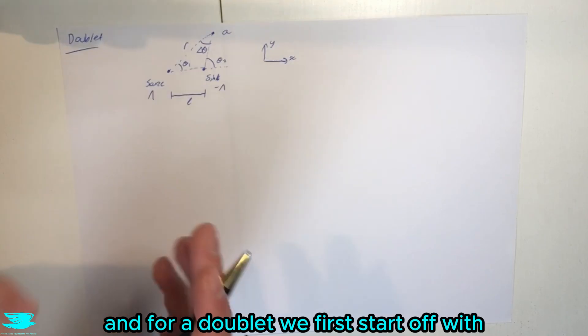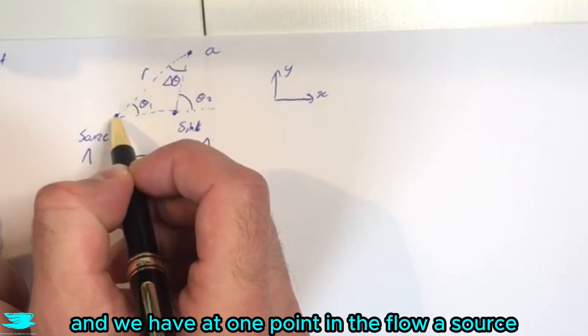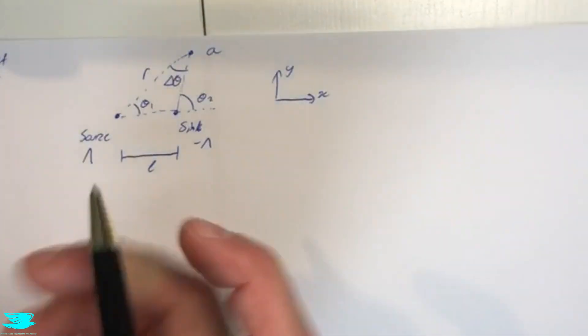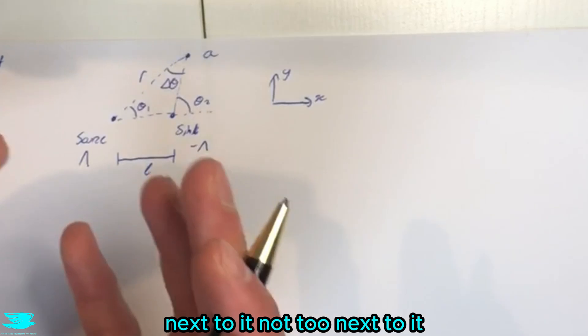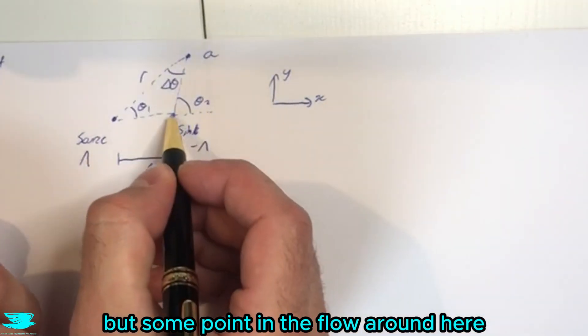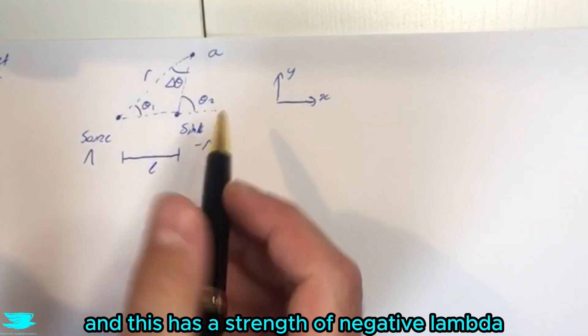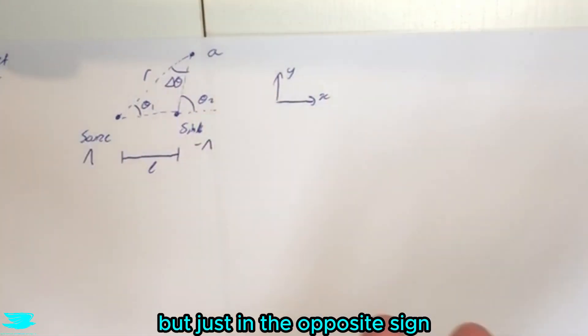And for a doublet we first start off with let's say we have the flow in this region here and we have at one point in the flow a source. So the flow comes out of this point and it has a strength of lambda. Next to it, not too next to it, but at some point in the flow around here we have the sink and that is where the flow is going into and this has a strength of negative lambda so it's the exact same strength but just in the opposite sign.